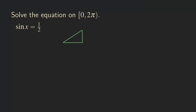We are looking at a specific angle in this right triangle. Because the equation tells us that sine of x equals 1 over 2, and we know that sine is opposite over hypotenuse, we label 1 on the opposite side of the angle and 2 as the hypotenuse.